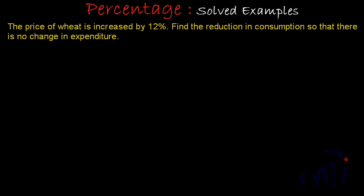The problem statement says the price of wheat is increased by 12 percent. Find the reduction in consumption so that there is no change in expenditure. We are going to solve this problem using two methods. In the first method, we assume the price and the quantity consumed as 100 each. In the second method, we solve it using variables.